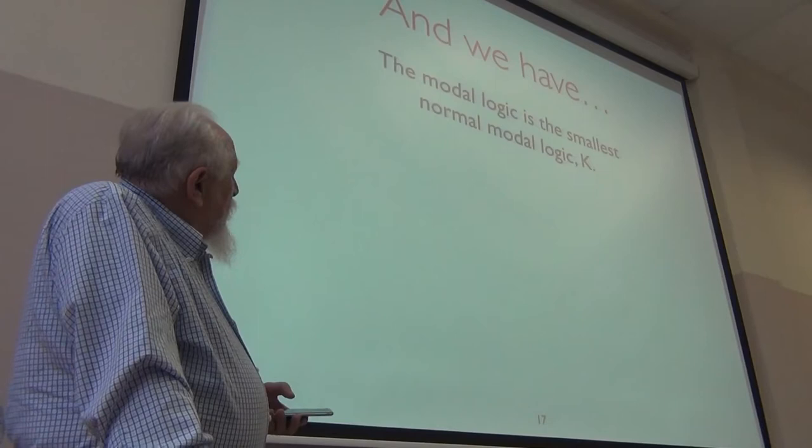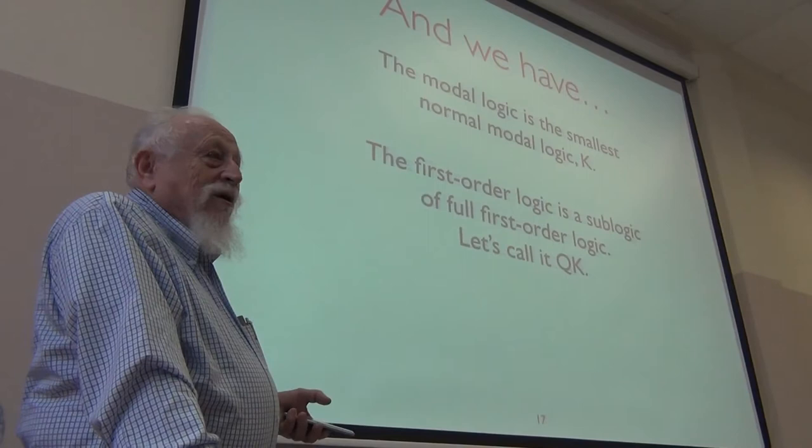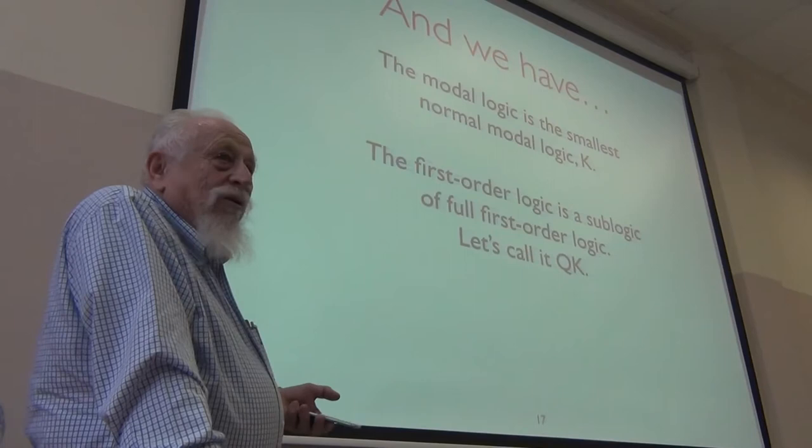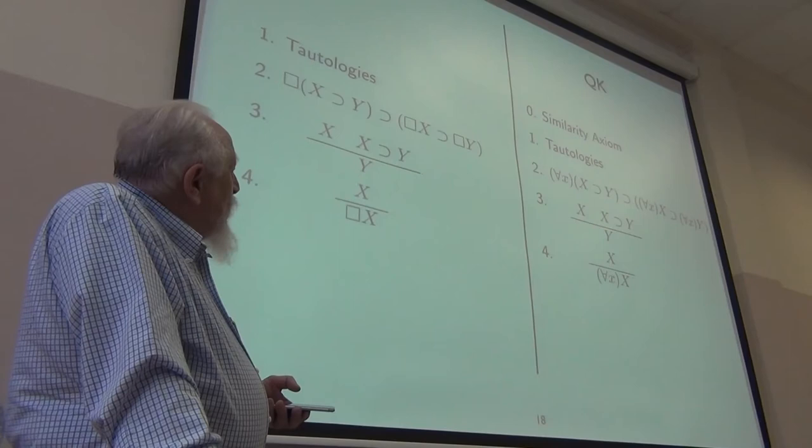The modal logic is called K — the smallest normal modal logic. The quantificational system is a subsystem of full first order logic; I'll call it QK, the analog of K. Here they are in parallel: this is what makes up K, and this is what makes up QK. There's that extra similarity axiom, but otherwise they match up exactly.